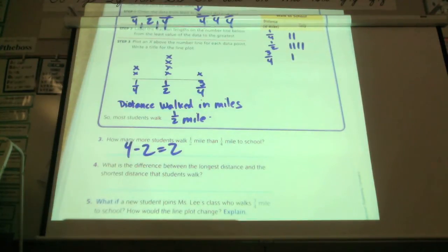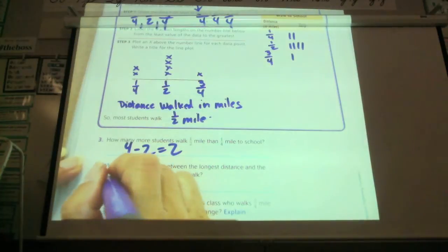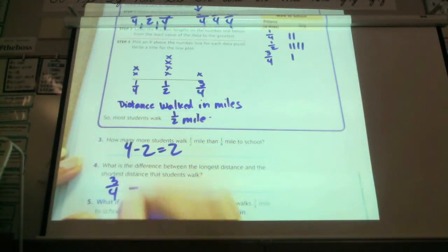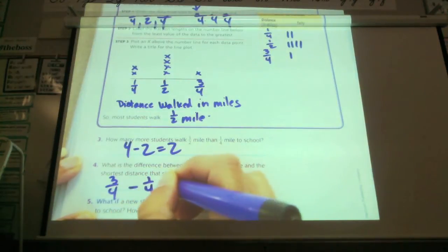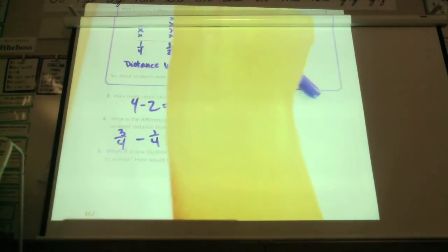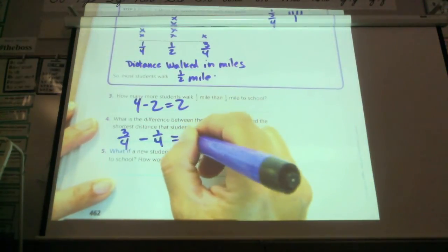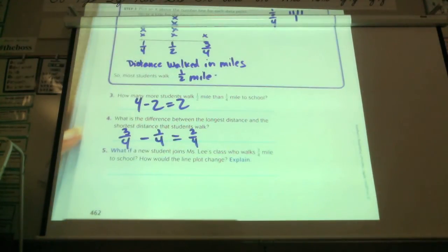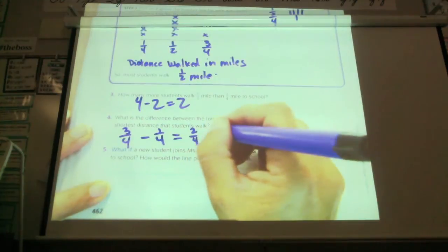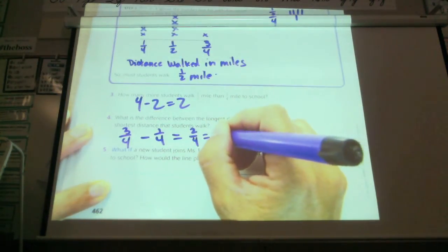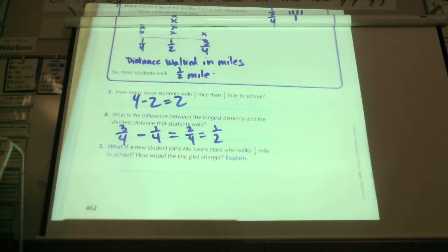Okay? What is the difference between the longest distance and the shortest distance? What is the longest distance? Three-fourths. Three-fourths. And what is the shortest distance? One-fourth. One-fourth. Do the subtraction. Two-fourths. And do I have an equivalent fraction that's reduced? What is it, class? One-half. So two-fourths, which actually equals one-half is the difference.